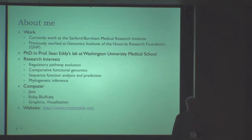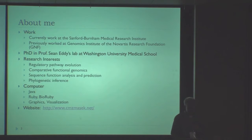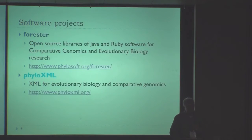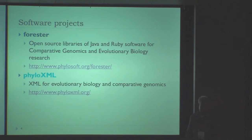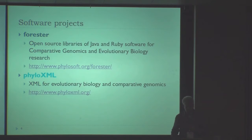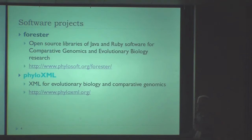I'm also interested in Java, Ruby, and BioRuby, and generally in graphics and visualizations — because I also like computer games, so these things fit nicely. Some of my software projects include Forrester, which is a collection of mostly Java and Ruby tools for comparative genomics and evolutionary biology. The URL is available if you're interested.